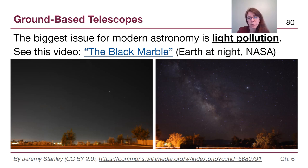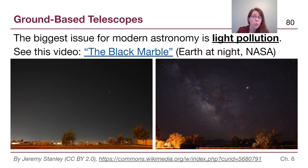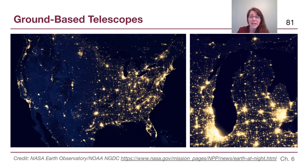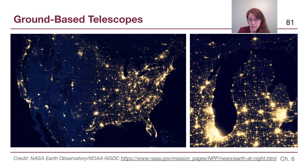Light pollution is the biggest issue for modern astronomy. There is a video called 'The Black Marble' in the playlist showing Earth at night and all the different light visible from space. If we can see those lights from space, that means it's light that wasn't actually being used helpfully at night — it's shining straight up into the sky, wasting electricity and polluting our skies.